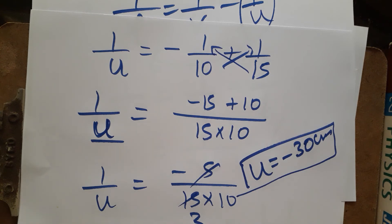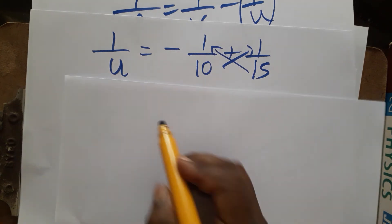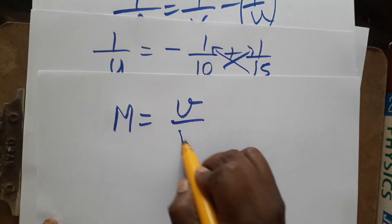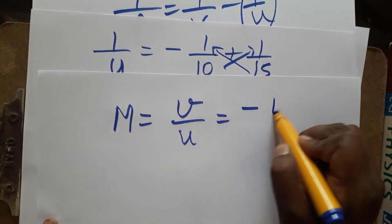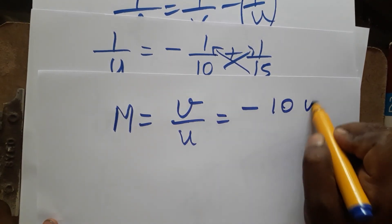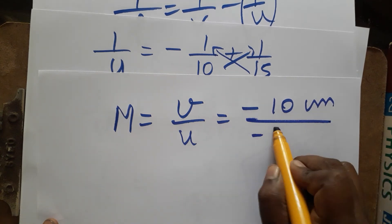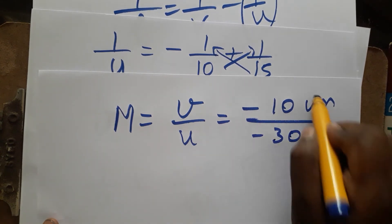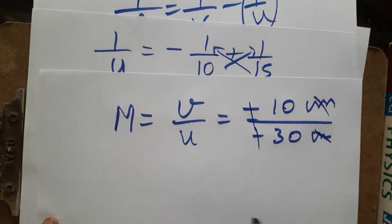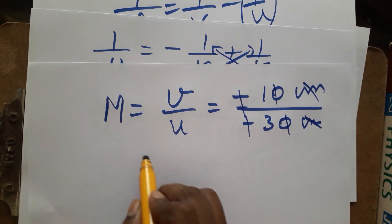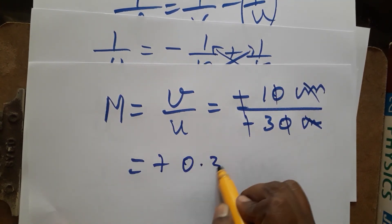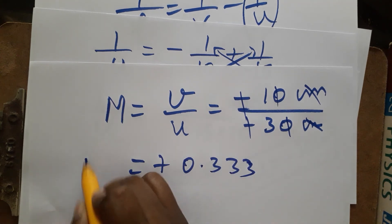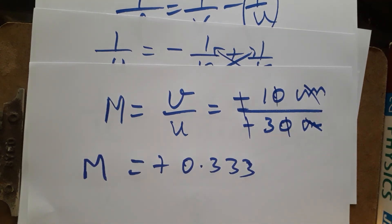Now for magnification: m = v/u = (−10)/(−30). The negatives cancel, the zeros cancel, giving us 1/3, which is approximately 0.333. So the magnification is 0.333.